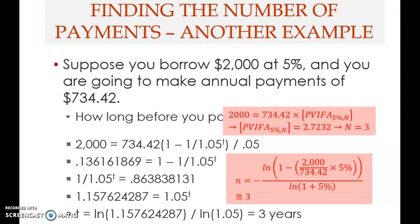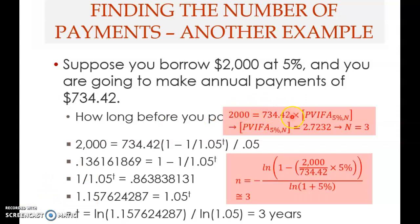You can also use the time value table. The present value of annuity is $2,000, and the payment is $734.42. So: 2000 equals 734.42 multiplied by the present value interest factor of annuity at 5 percent for N years. Dividing 2000 by 734.42 gives you 2.7232. Now you need to look for this value in Table A3 in your textbook appendix, under the 5 percent column.